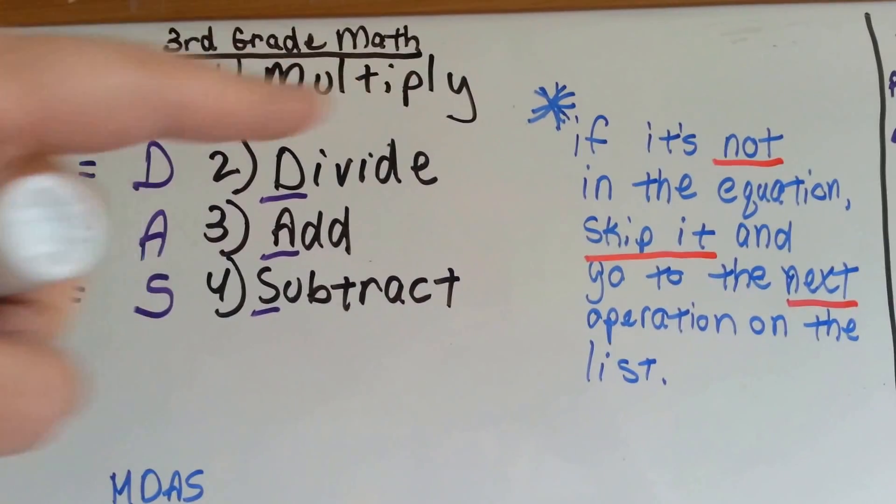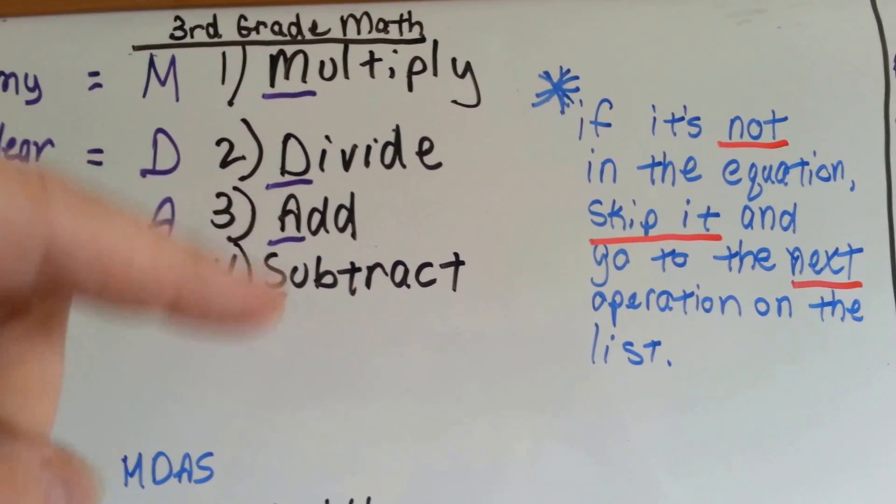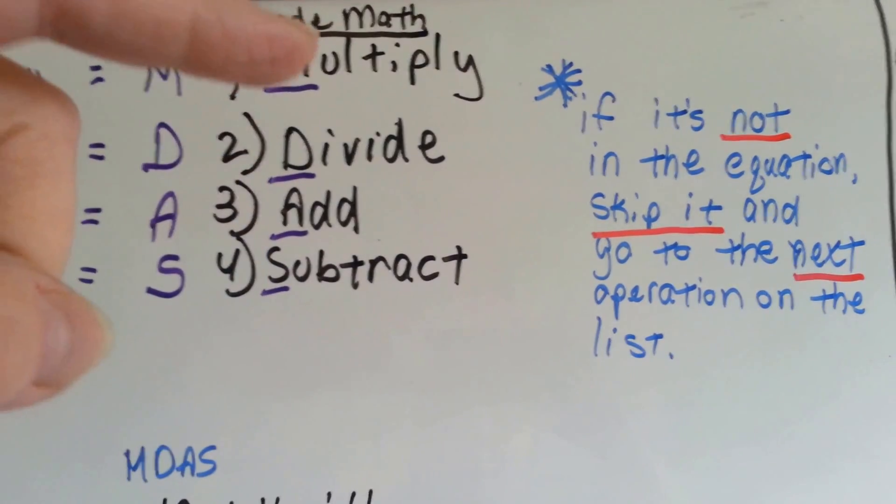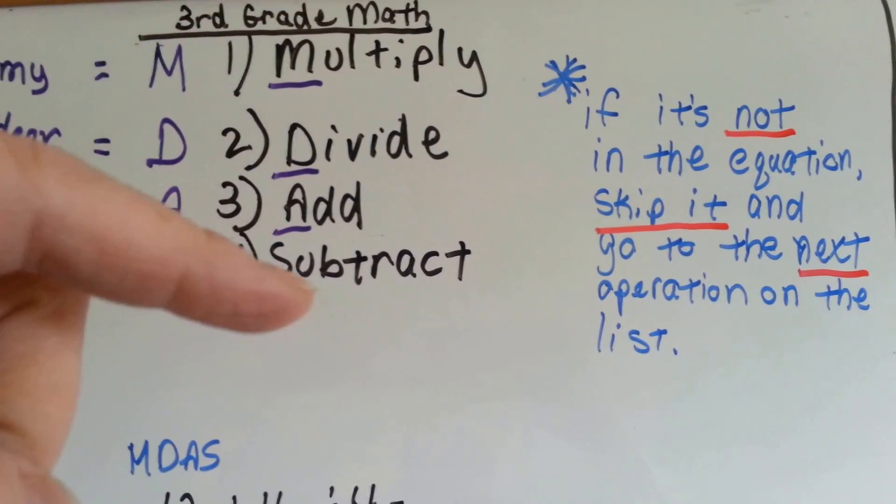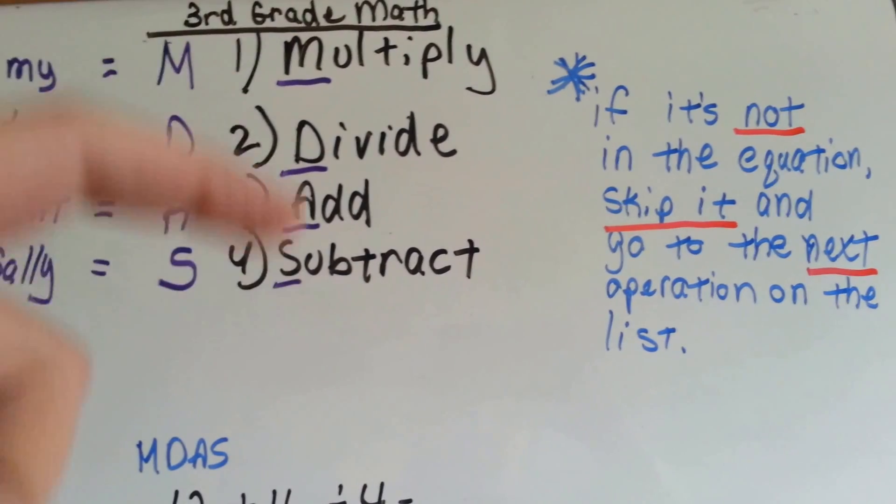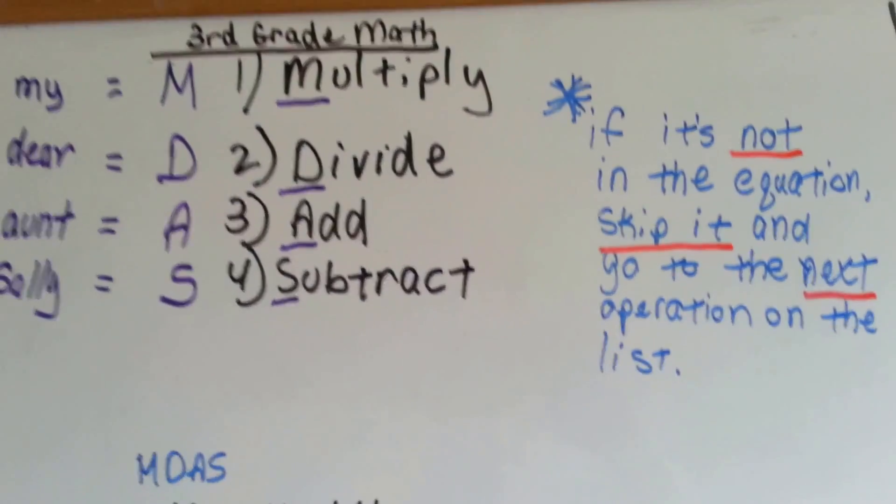Let's say there is no multiplication in the equation. Then you would just divide, and then add, subtract. What if there is multiplication and division, but no adding? Well, then you just do multiply, divide, subtract. As long as you're doing it in this order. If it's not in there, just skip it and do the next thing in order.